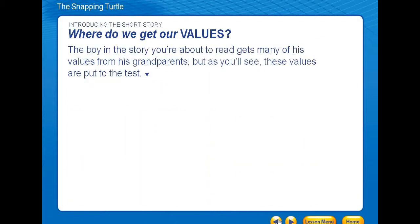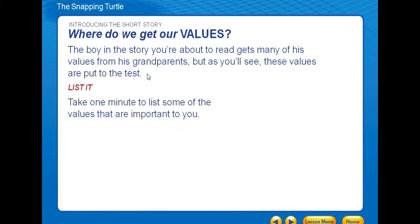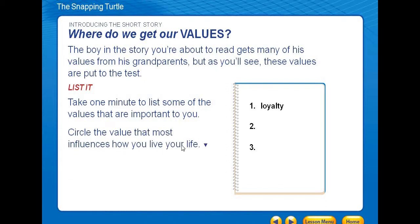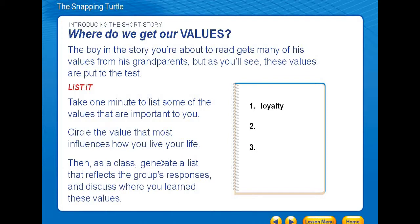Especially when you are a kid, the boy in the story you are about to read gets many of his values from his grandparents. But as you'll see, these values are put to the test. When you do something, it tests not only your upbringing but your values — how loyal you are, how honest you are. Take one minute to list some of the values that are important to you and circle the value that most influences how you will live your life.